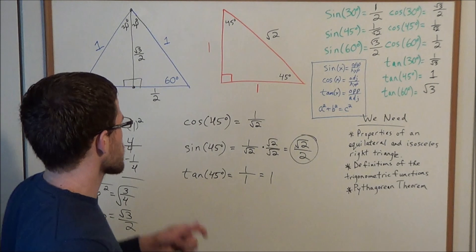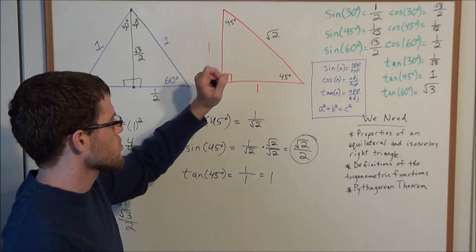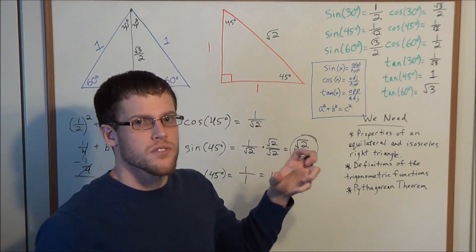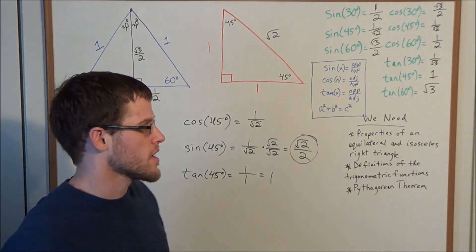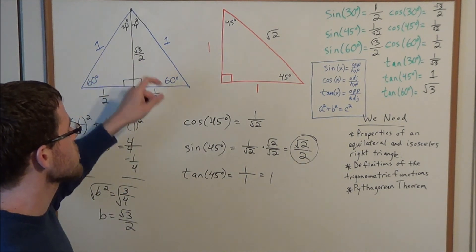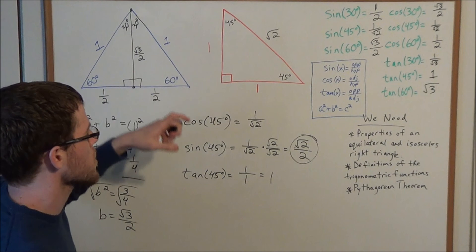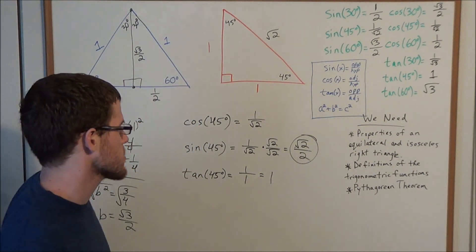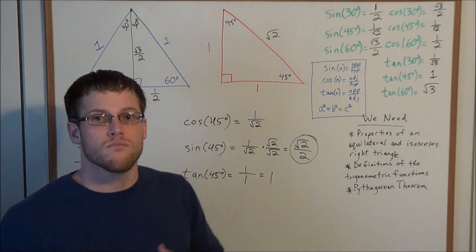To recap: using the isosceles right triangle we derived the trigonometric values at 45 degrees for sine, cosine, and tangent. Using the equilateral triangle, we found the trigonometric values for sine, cosine, and tangent at 30 and 60 degrees. Thank you all for watching, and I hope it was helpful.